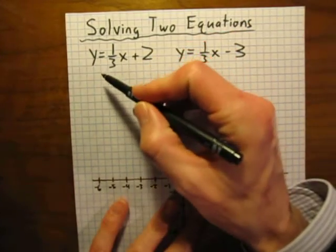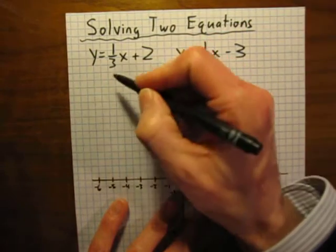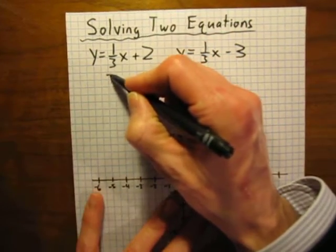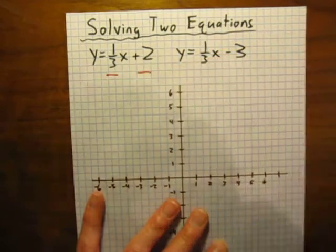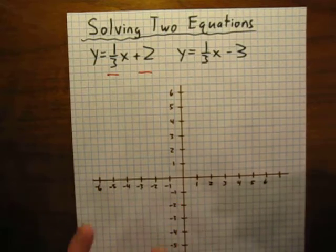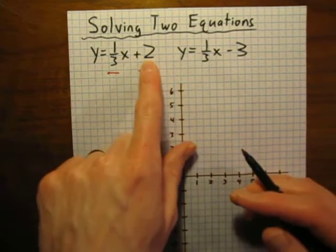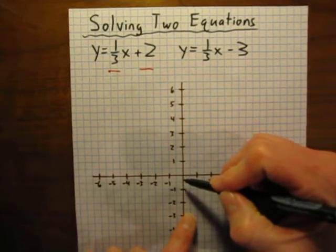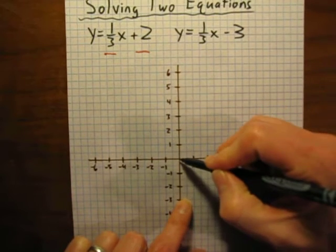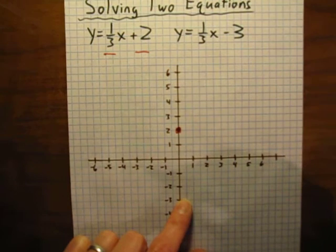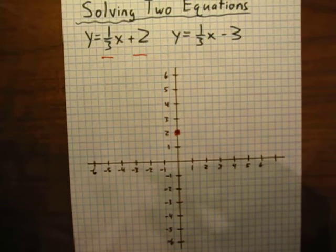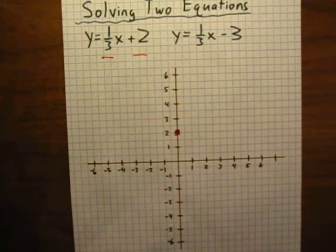So in this equation here, this is in slope-intercept form. That number right there, 1/3 is our slope, 2 is our y-intercept. So let's start with our y-intercept of positive 2. We start then on our graph at the origin, we're going to go up two spaces, up the y-axis, and right there is our starting point. That's going to be the y-intercept.